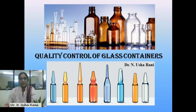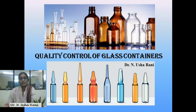Glass containers especially those used in the pharmaceutical industry as packaging material. Apart from glass containers, the other packaging materials are plastic containers, metal containers, and secondary packaging materials like cartons, wooden boxes, etc. All these form an integral part of the pharmaceutical industry. These packaging materials affect the quality, safety, and efficacy of the drug products. Hence the quality control of these packaging materials forms a very significant activity in the pharmaceutical industry.